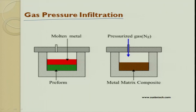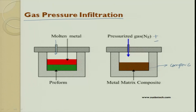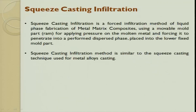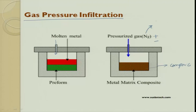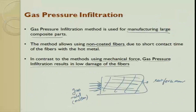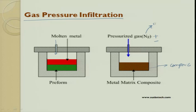In the gas pressure infiltration setup, you have a container with the metal and a preform. You apply pressure through gas; when you apply this pressure the liquid present tries to get infused into the preform and makes a composite. You can use positive pressure or negative pressure, and the gas plays a very important role. You can also choose the gas to promote reactions, or use an inert gas so that no reactions occur.